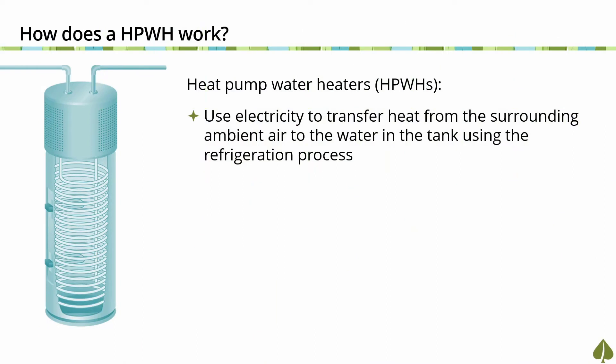A heat pump water heater works by using electricity to transfer heat from the surrounding ambient air to the water in the tank. This is called an air source heat pump or air to water heat pump. This process is similar to how an air conditioner works, only in reverse. Heat pumps extract heat from the surrounding ambient air and transfer it into water stored in the tank using the refrigeration process.